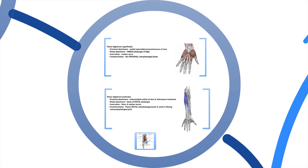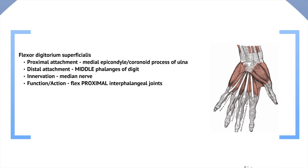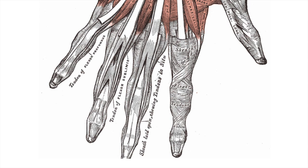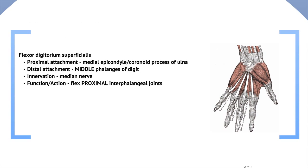Now we're going to talk about the flexor digitorum muscles, of which there are the superficialis and profundus — profundus meaning deep — and we're also going to look at how the tendons insert into the phalanges of the hand. Flexor digitorum superficialis originates at the medial epicondyle as well as the coronoid process of the ulna. Its distal attachment is the middle phalanges of the digits. As you can see, the superficialis muscle inserts into the middle aspect of the phalanx, and the tendons split into two at this stage. This muscle is innervated by the median nerve, and its function is to flex the proximal interphalangeal joints.